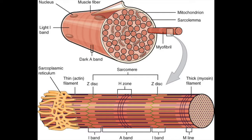Any place where you only see thick filament composed of myosin, we call that the H zone. Next we have the A band. The A band is going to be the length of the myosin thick filament, so this is never going to change. The A band never changes because the length of the myosin thick filament itself never changes.